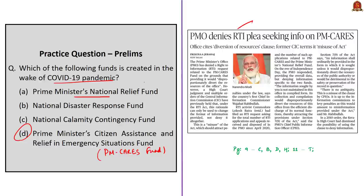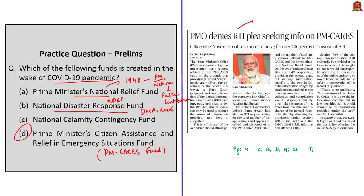Looking at the remaining options: Option A, Prime Minister's National Relief Fund, was set up in 1948 based on an appeal by then Prime Minister Jawaharlal Nehru, established with public contributions to assist displaced persons from Pakistan after the partition. Option B, National Disaster Response Fund, is a financial mechanism set up at the national level under the Disaster Management Act of 2005. Option C, National Calamity Contingency Fund, has been merged with the NDRF. So the correct answer is option D, PM CARES Fund.